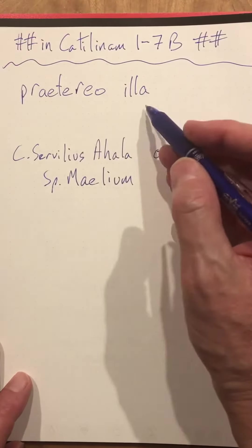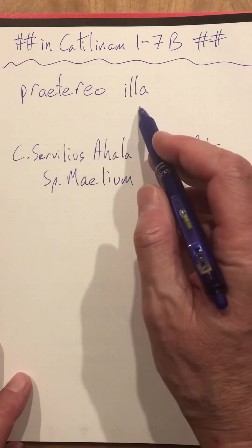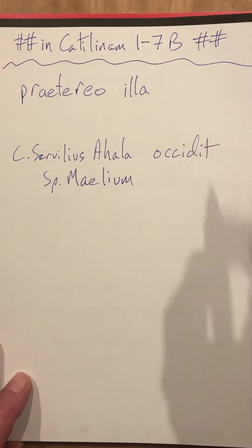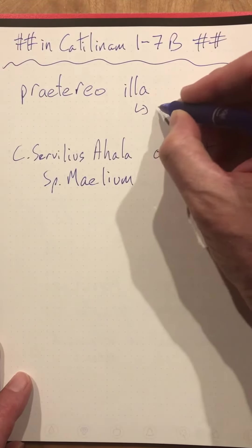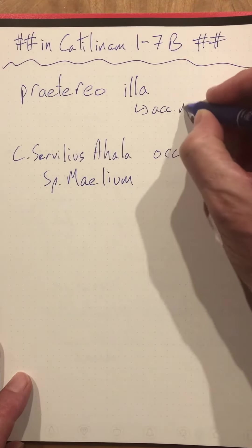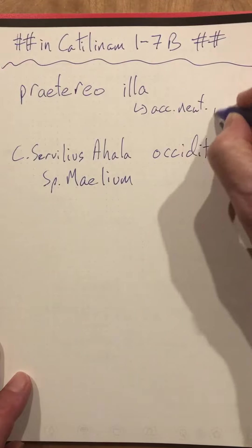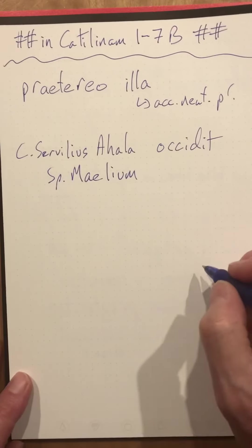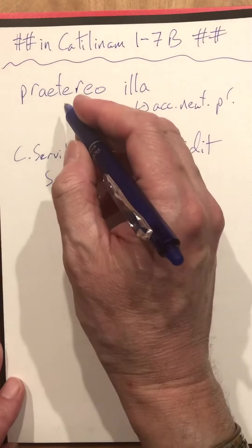'Praetereo illa' — I skip over those things. Accusative, neuter, plural, and again, first person singular right there.